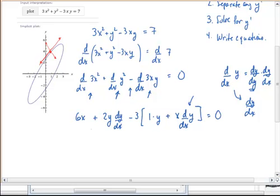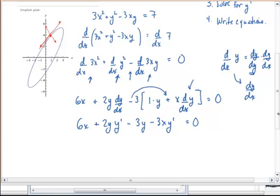So now we can distribute our terms. We have 6x plus 2y, I'm just going to call this y prime now, minus 3y. And I'm going to distribute the negative here, minus 3xy prime equals 0. So now I'm finally finished with implicitly differentiating.